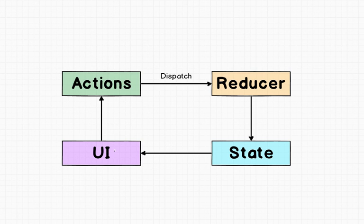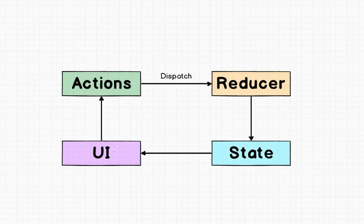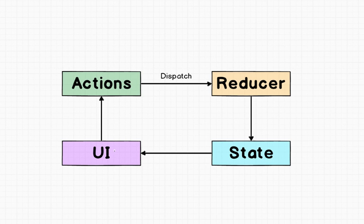So now we've covered the three fundamentals: we have a single source of truth, our state is read-only, and changes are made by pure functions. It's time to write some code, and that's exactly what we're going to do in the next video. We are going to create some actions, a reducer, and some state in a plain JavaScript application. It's going to be nice and simple, but you're actually going to be able to apply everything you've learned from the three fundamentals, and it's all going to make absolute sense.